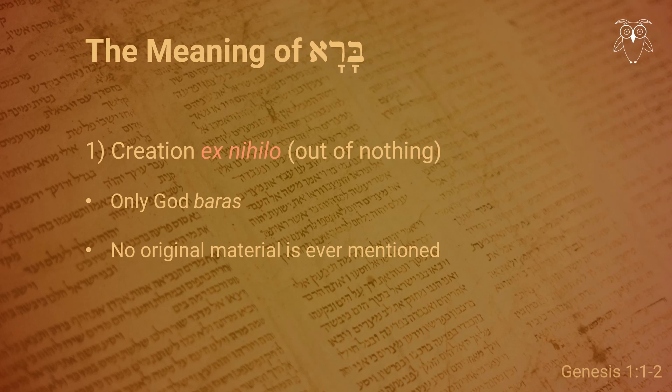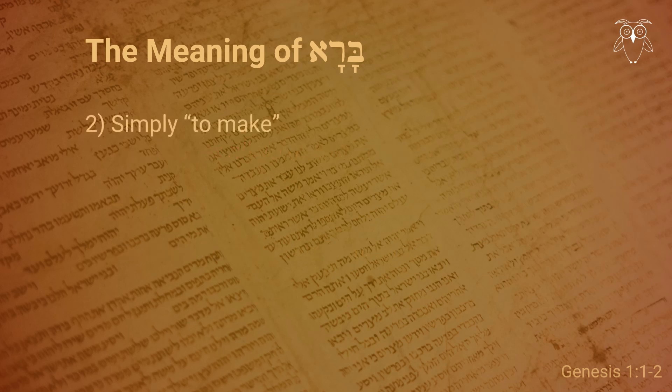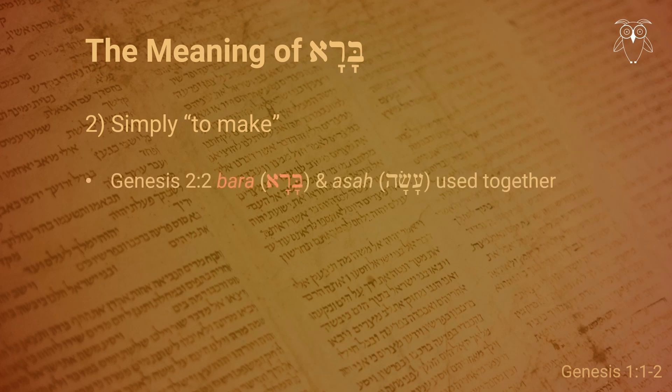A second group of scholars don't think that bara means 'to create out of nothing,' but simply 'to make,' though they may affirm that it is a special type of making that only God can do, and that there is nothing in Genesis 1 that obliges us to understand the verb as 'create out of nothing.' Some arguments for this position can be found not much later. For example, in Genesis 2 verse 2, the verb asah, 'to make,' is used to describe what God has just finished, meaning it is equally correct to say that God bara'd the heaven and the earth and that God asah'd them.